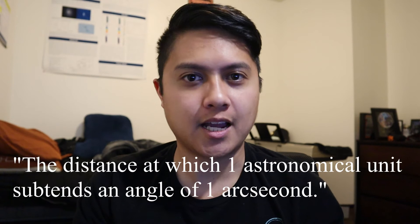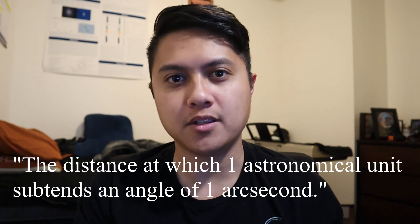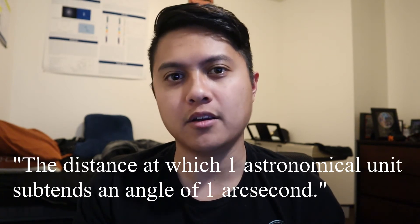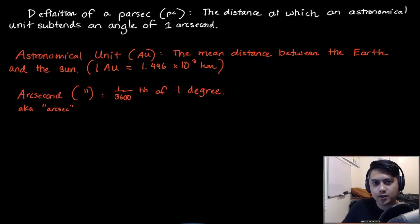But how exactly did astronomers define a parsec? The technical definition is the distance at which one astronomical unit subtends an angle of one arcsecond. Let's try and understand what this means. I've written out the definition again, which is the distance at which an astronomical unit subtends an angle of one arcsecond.